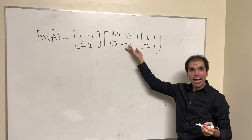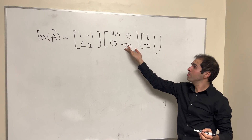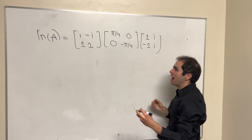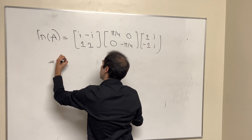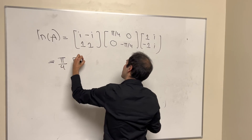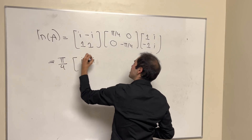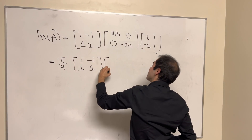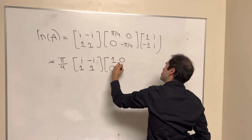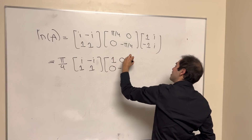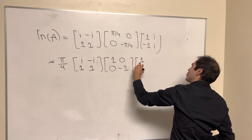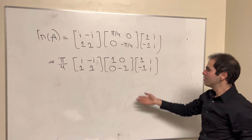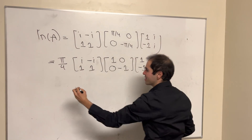This is what the diagonal terms simplify to. And the cool thing is you can factor out π/4. So you get π/4 times a matrix [[i, −i], [1, 1]] times [[1, 0], [0, −1]] times [[1, −1], [i, i]].